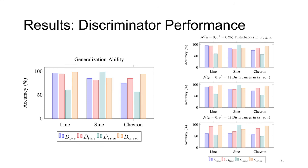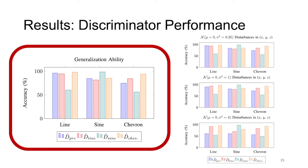In the plot here, discriminator D-hat-pre is pre-trained on a combination of three trajectories, while the others are trained during co-optimization, each on a specific trajectory. When tested against optimized newly generated trajectories, we observed that the co-optimized discriminators achieve on-par or better performance when tested against the specific trajectory they were trained on. Generalization between line and chevron trajectories is good, probably because the observed trajectories within the discriminator observation window for chevron are mostly straight lines.